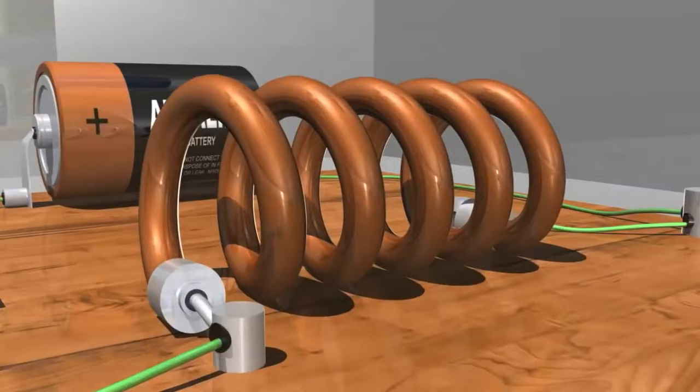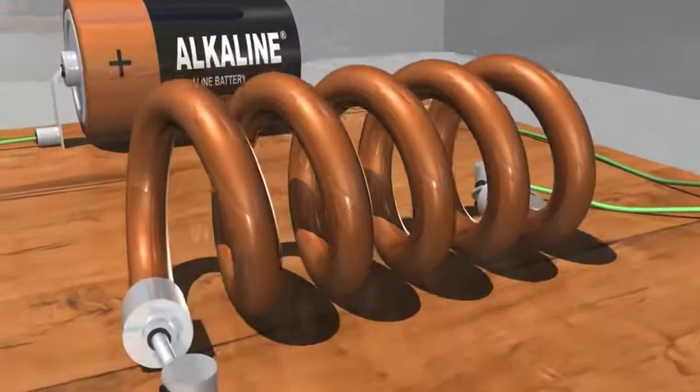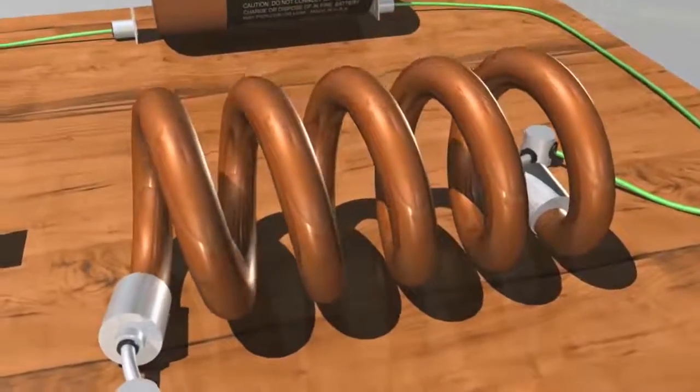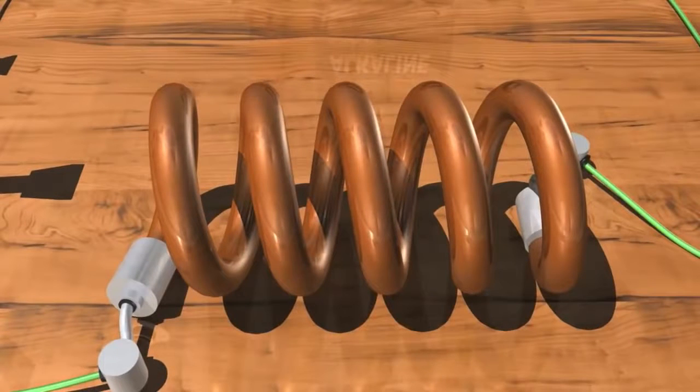Inductors store energy in the form of magnetic fields that are generated around them when a current passes through them. They are called inductors because they induce a voltage in their coils when that magnetic field changes. We will see this in a minute.